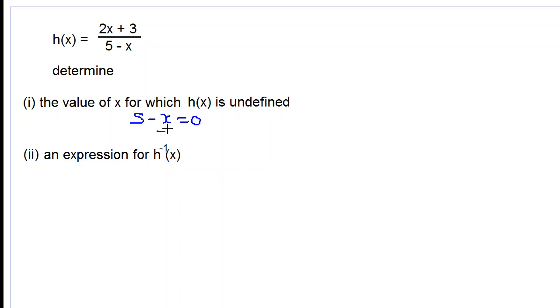Let's subtract 5 from both sides, so we have negative x is equal to negative 5. Let's multiply both sides by negative 1, so we get x is equal to 5. The answer is x equals 5.